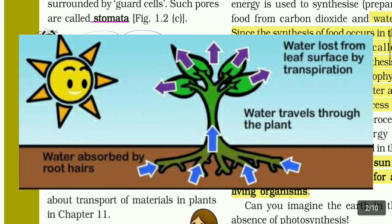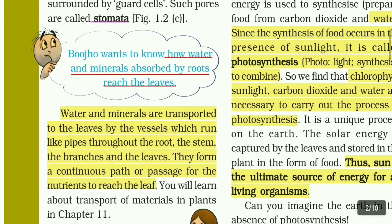Water and minerals are transported to the leaves by vessels which run like pipes throughout the root, stem, branches and leaves. They form a continuous path or passage for the nutrients to reach the leaves.